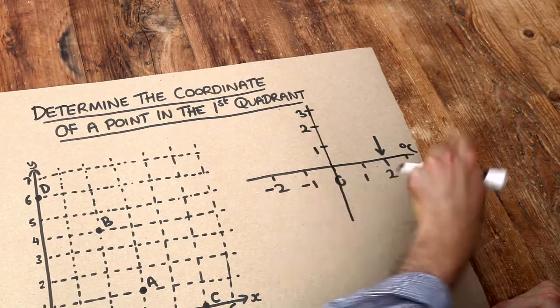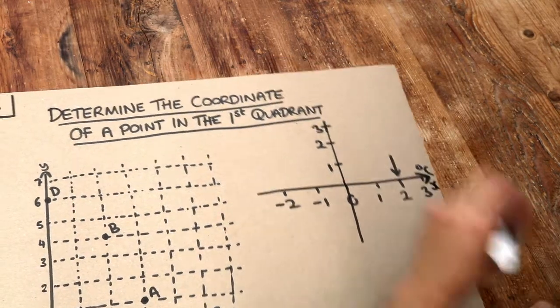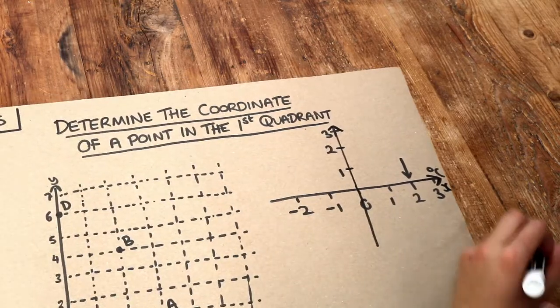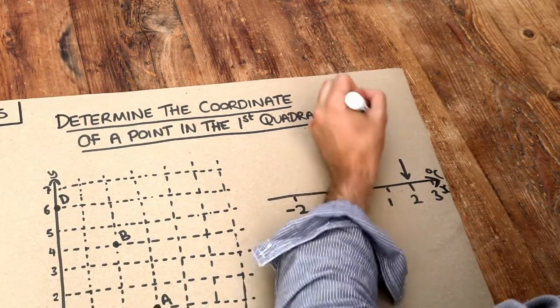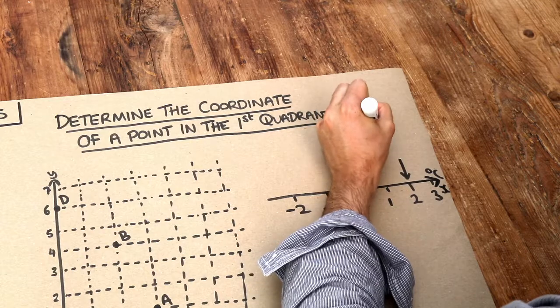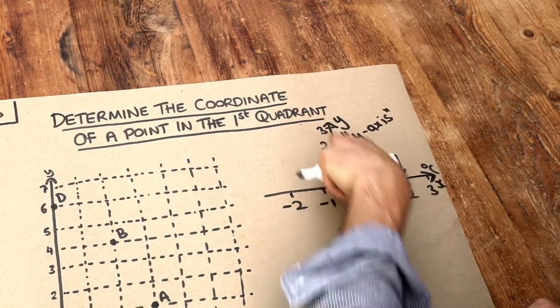Now this horizontal number line we call the x-axis, and the vertical number line we call the y-axis. Each of these are axes.